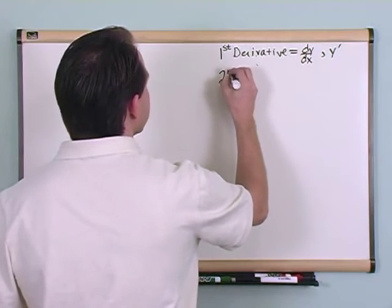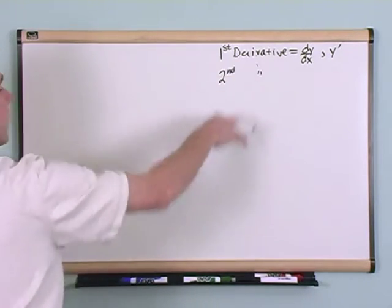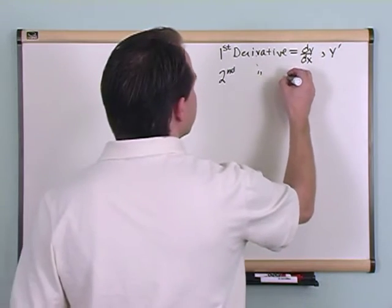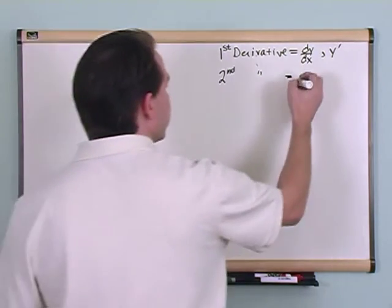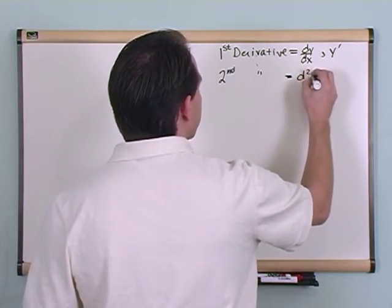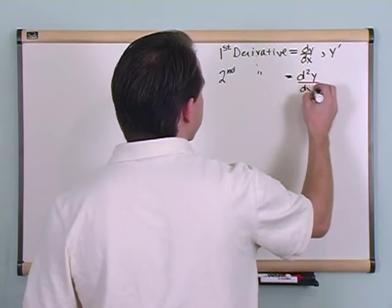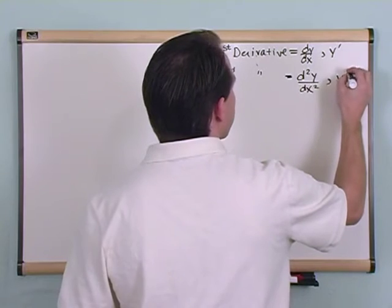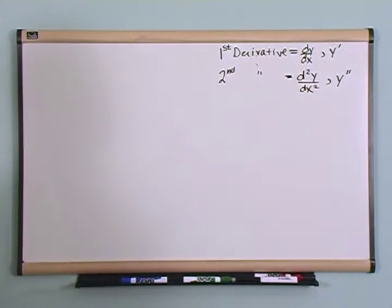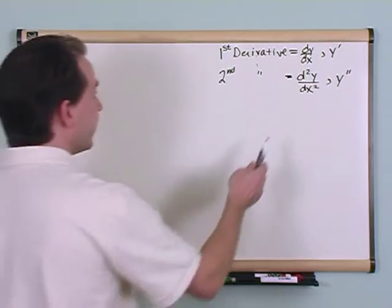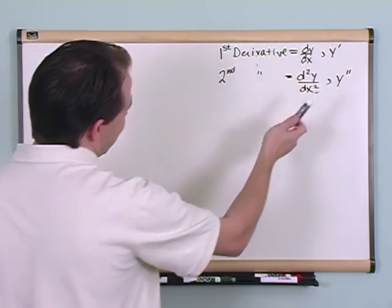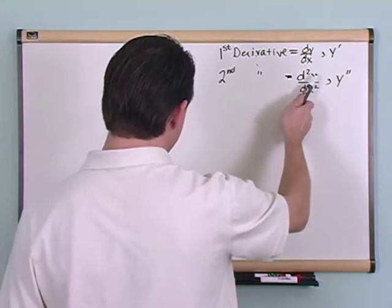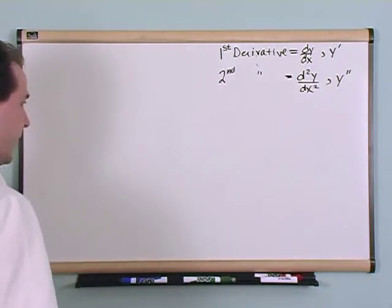The second derivative, these little lines here mean derivative, you would write as this, d squared y over dx squared, and you would also write that as y with two little primes. So I'm just showing you here kind of the big picture way that you write this stuff down. Derivative of y with respect to x, in this case this is telling you it's the second derivative of y with respect to x.